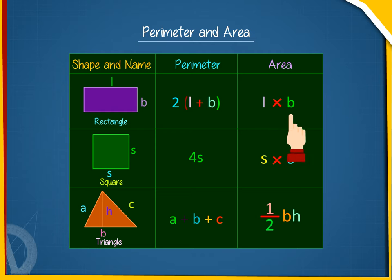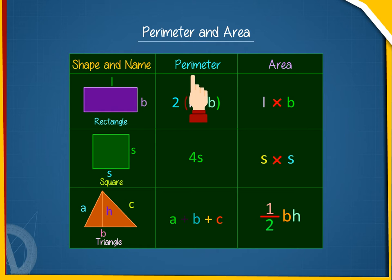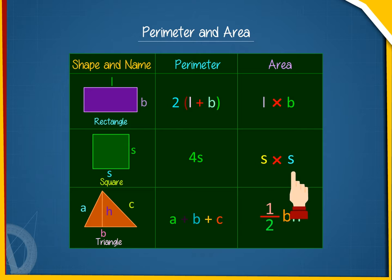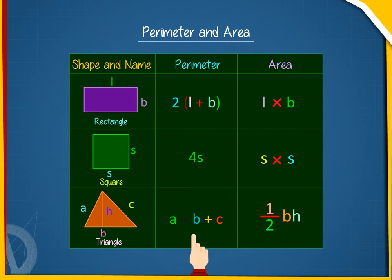Square: parameter is 4S, area is S into S. Triangle: parameter is A plus B plus C, area is half B times H.